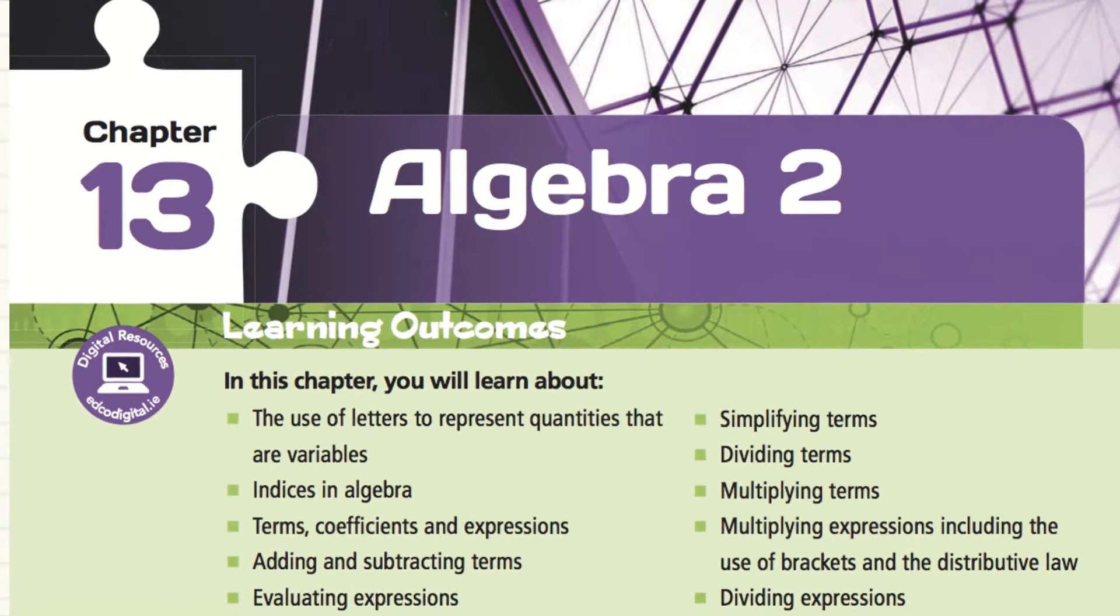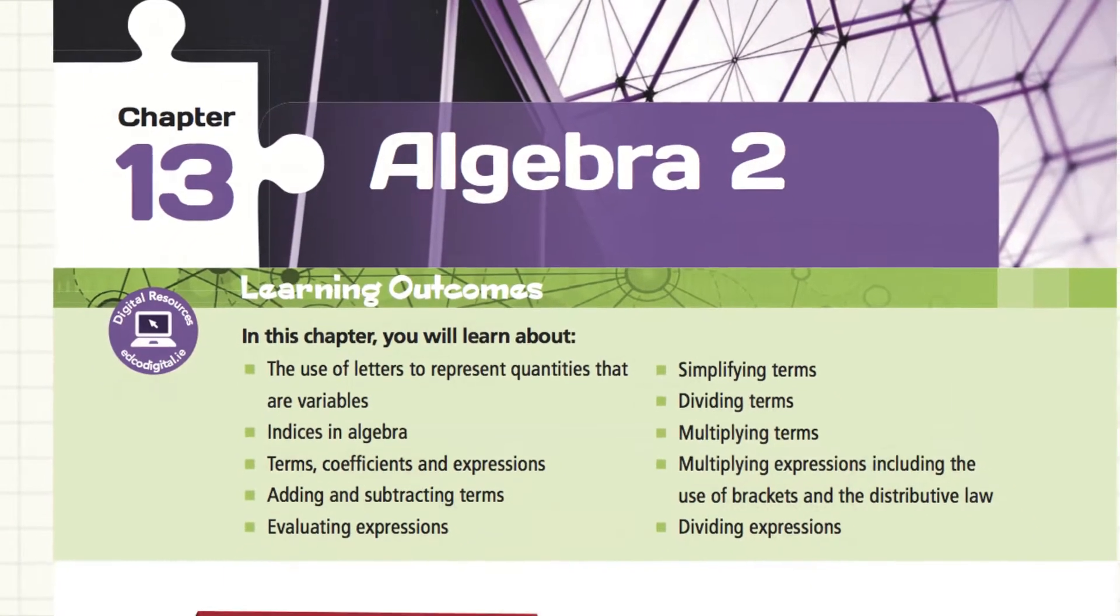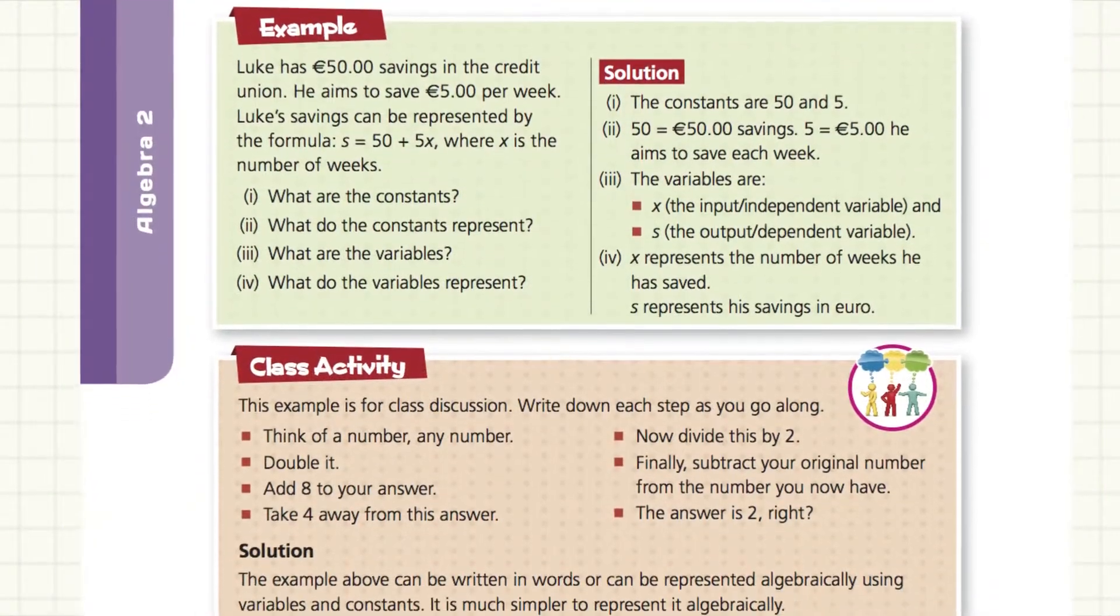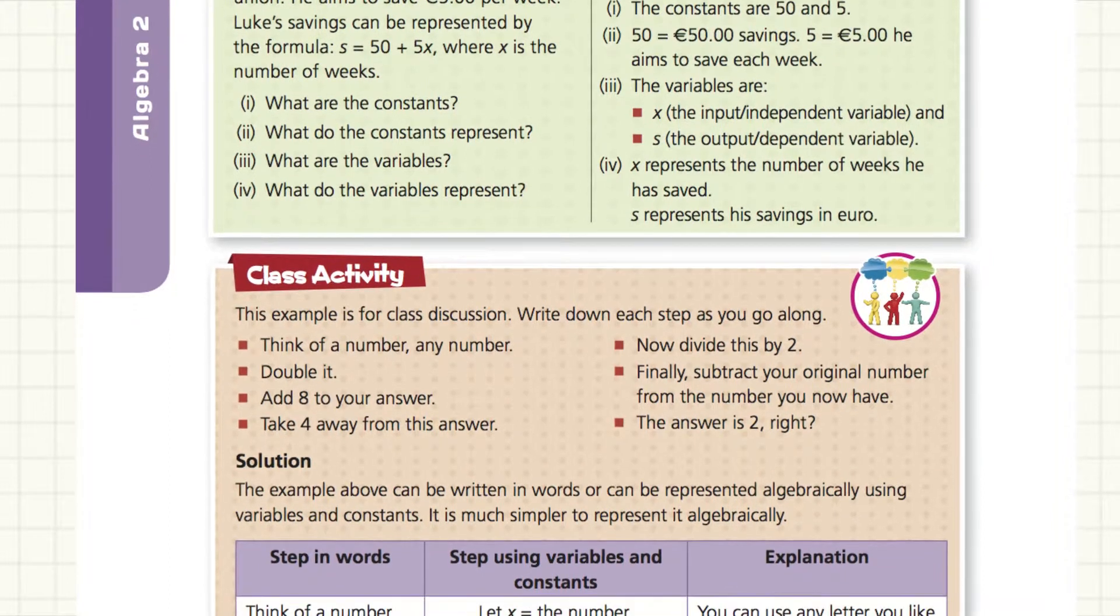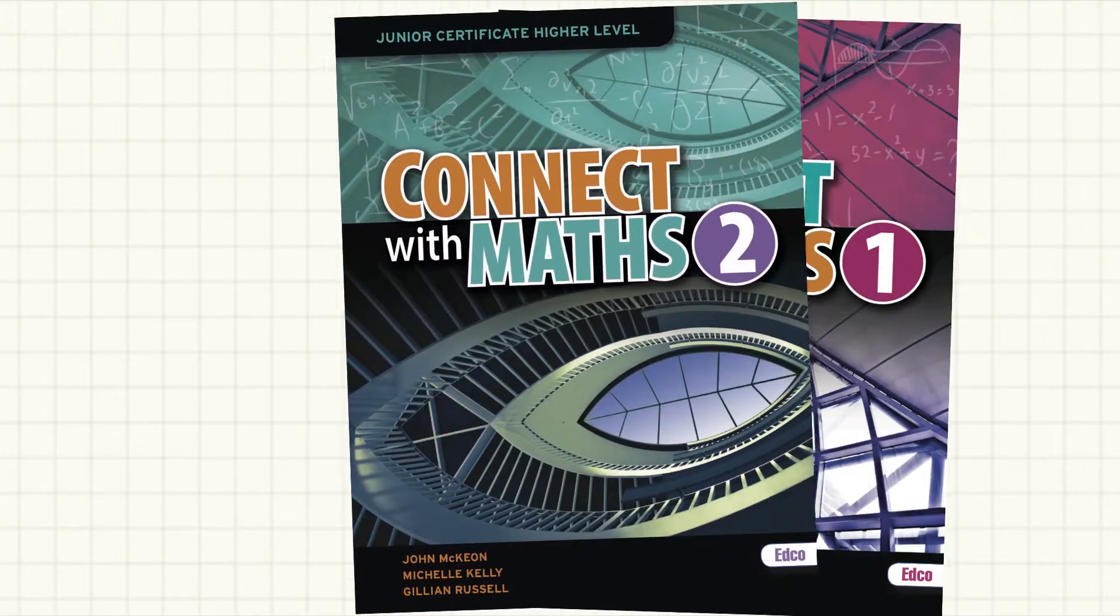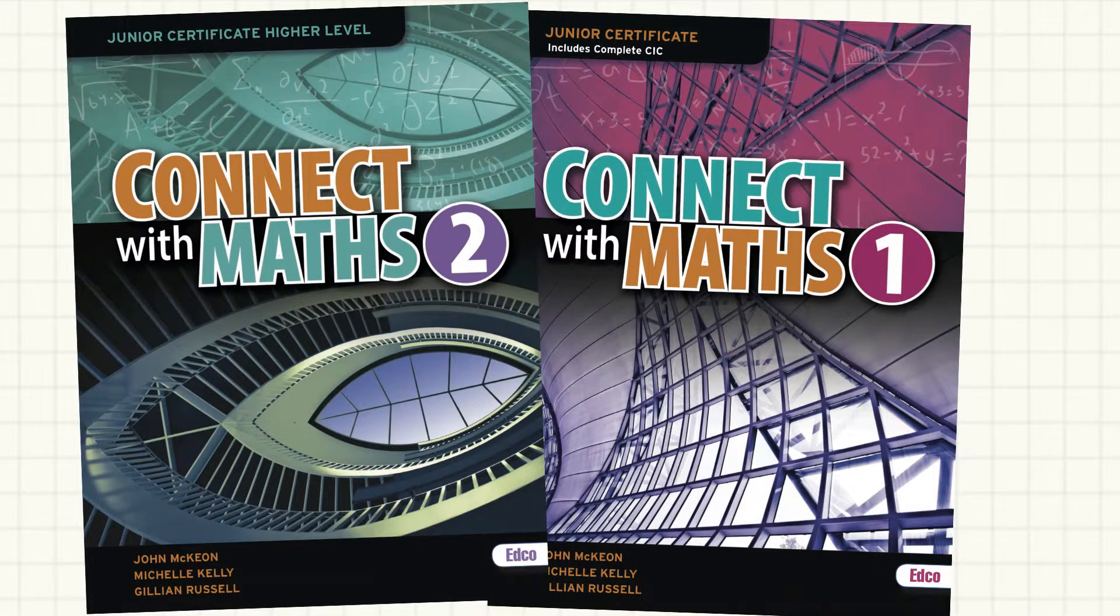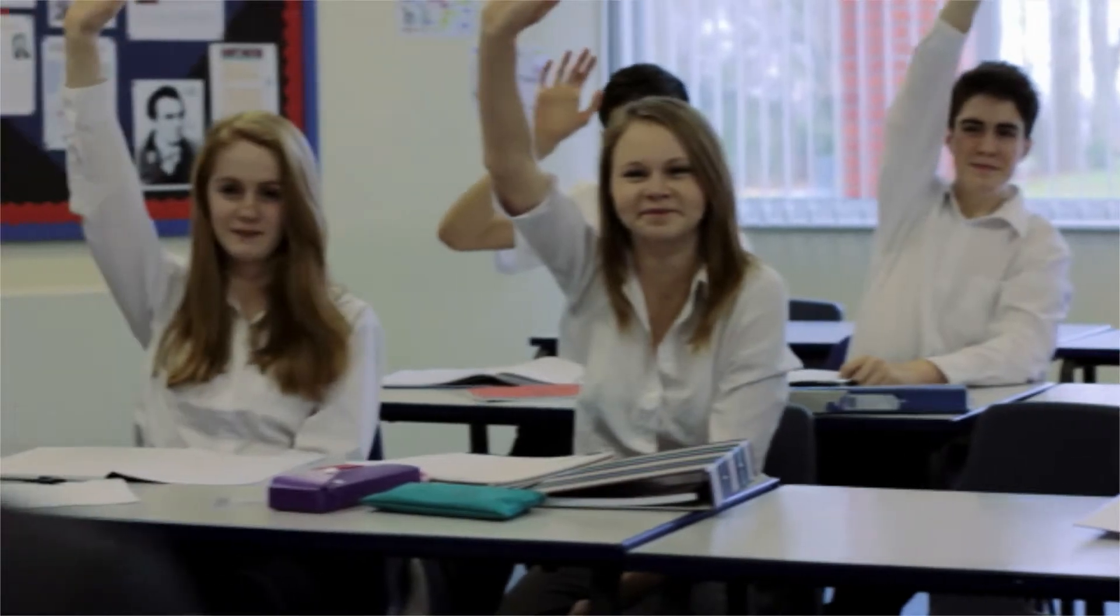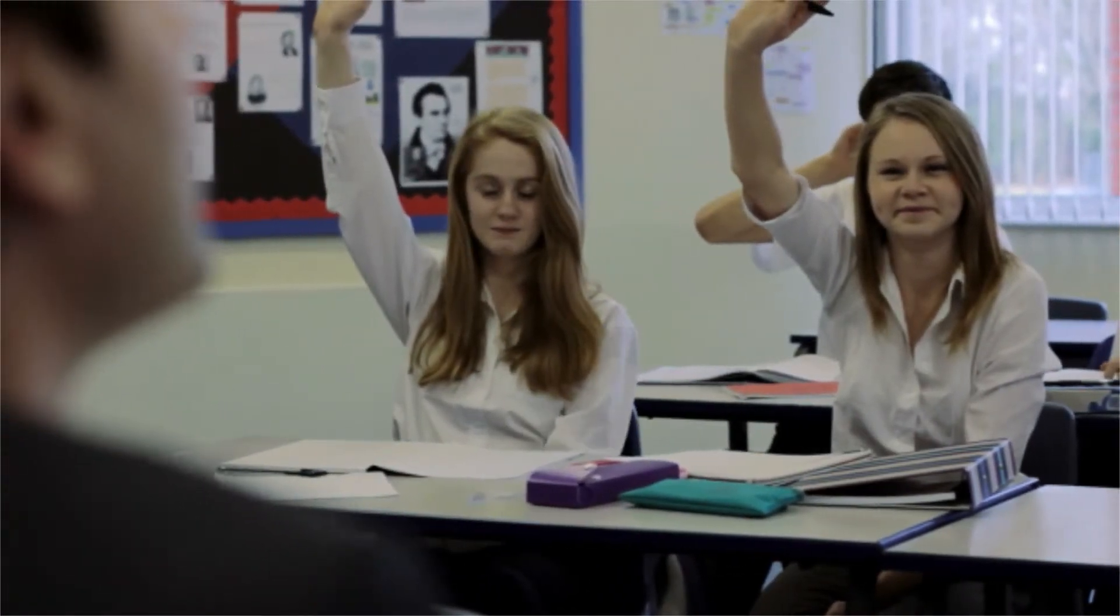Connect with Maths 1 covers the complete Ordinary Level Maths course and Common Introductory course. Students can complete the higher level syllabus using Connect with Maths 2. This allows teachers and students to defer a decision on level until well into their Junior Certificate.